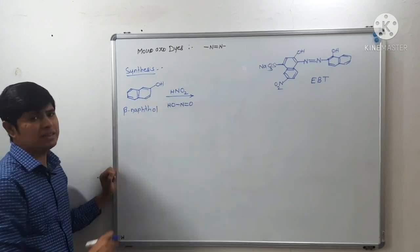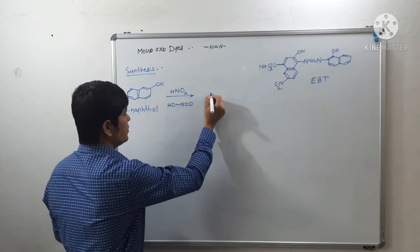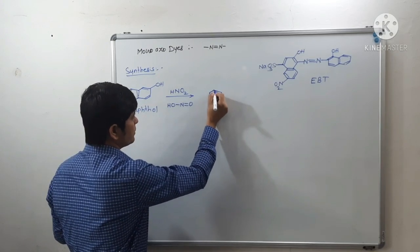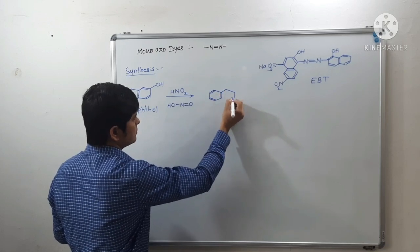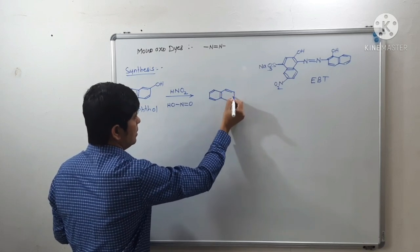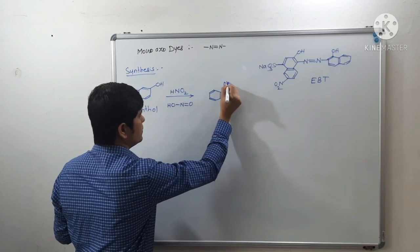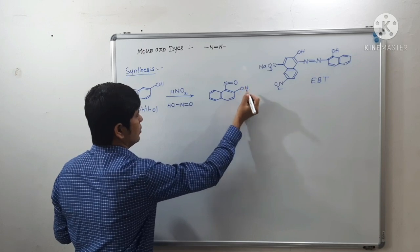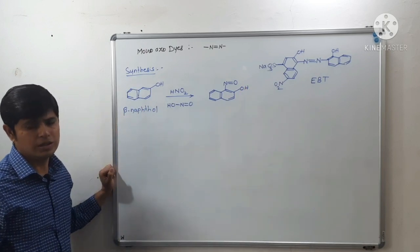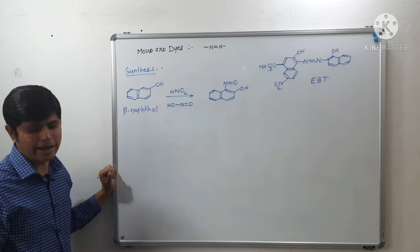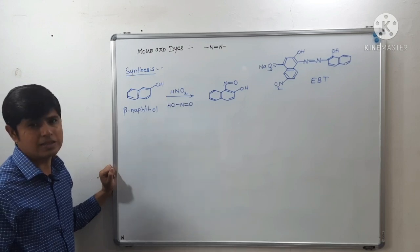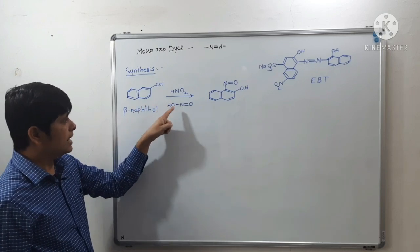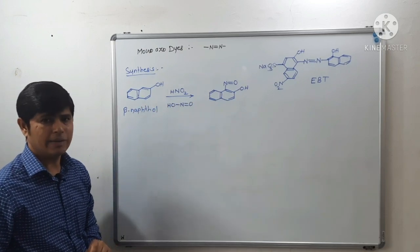Beta-naphthol is treated with nitrous acid, and we will get alpha-nitroso-beta-naphthol. Alpha-nitroso-beta-naphthol is a gambine Y compound.